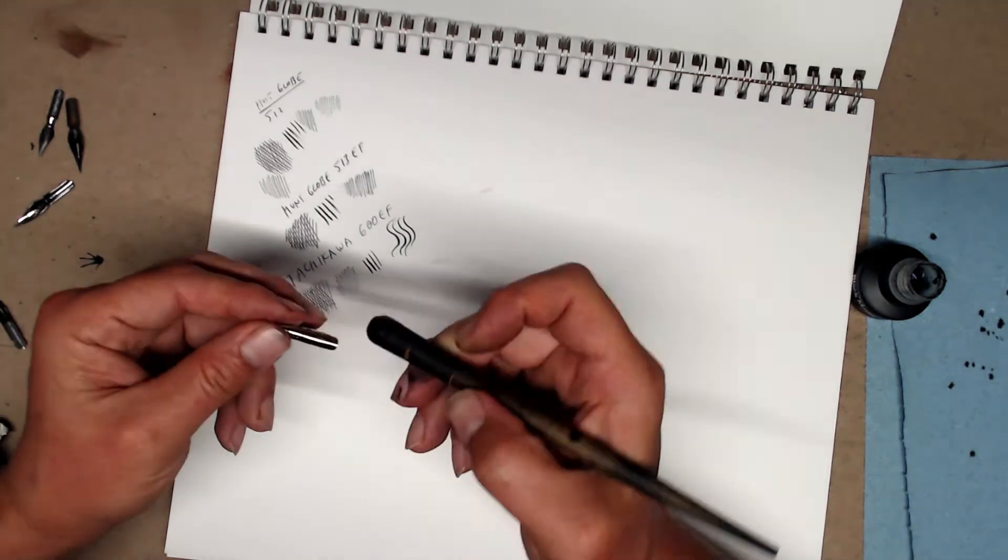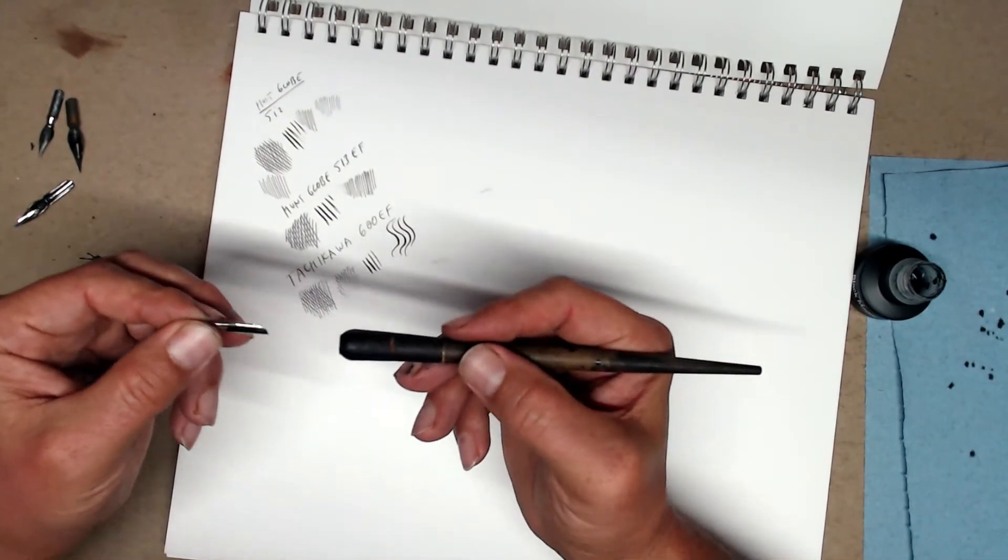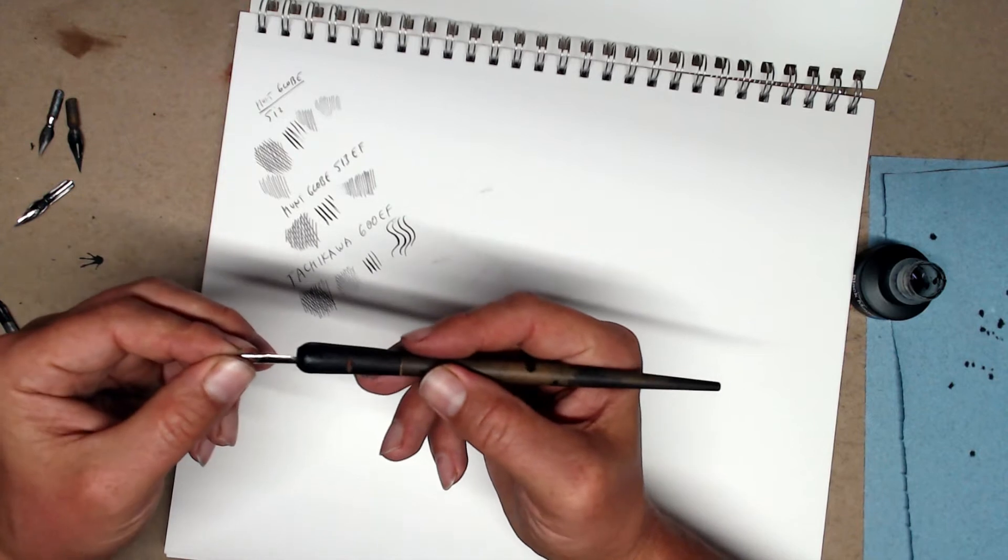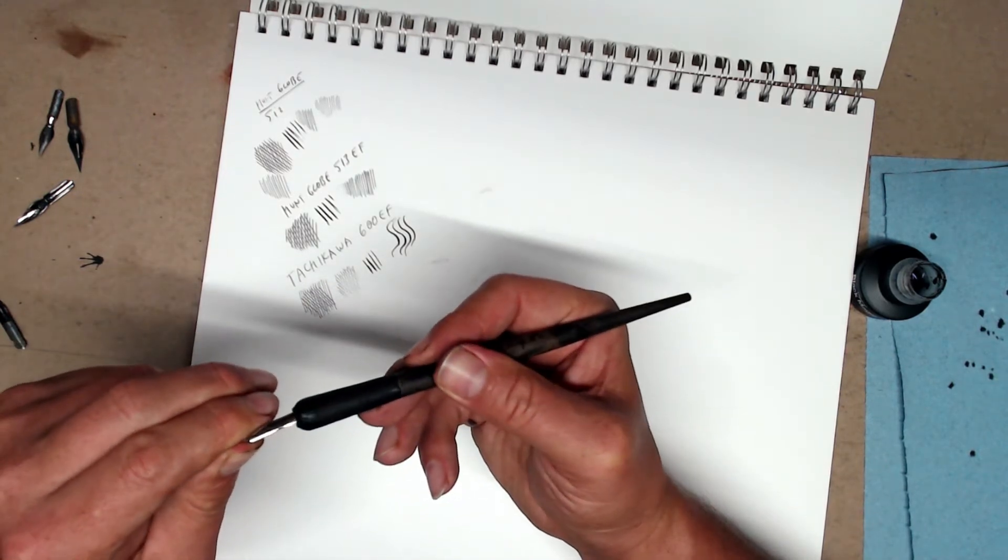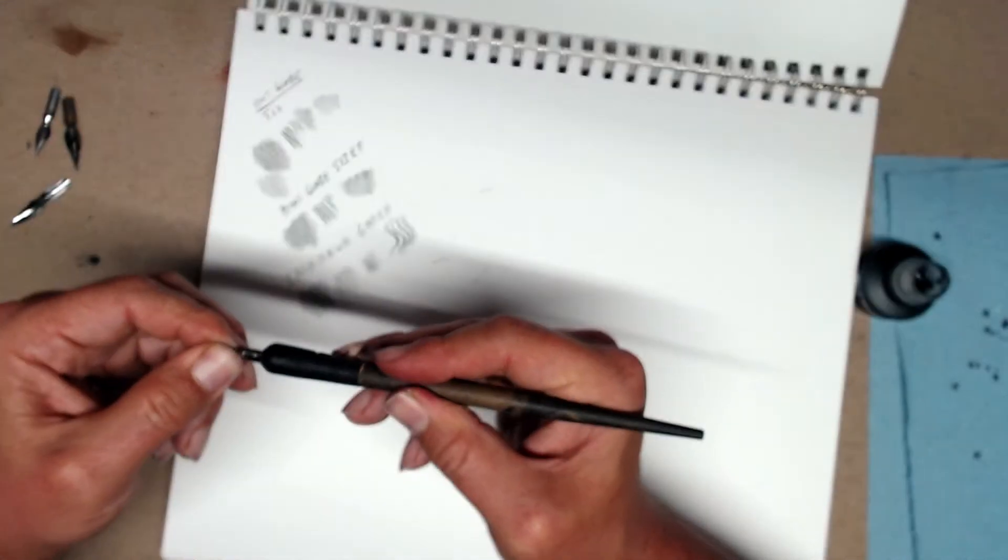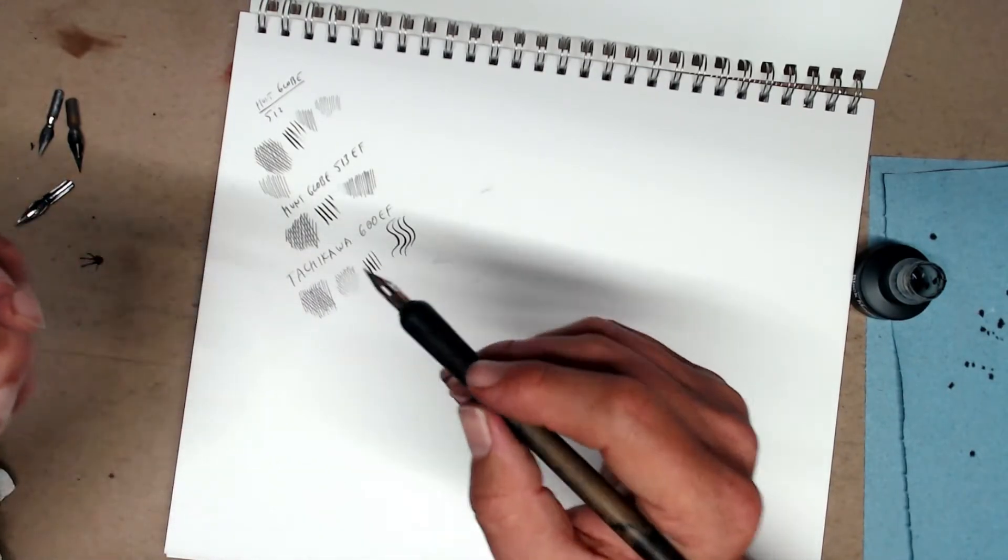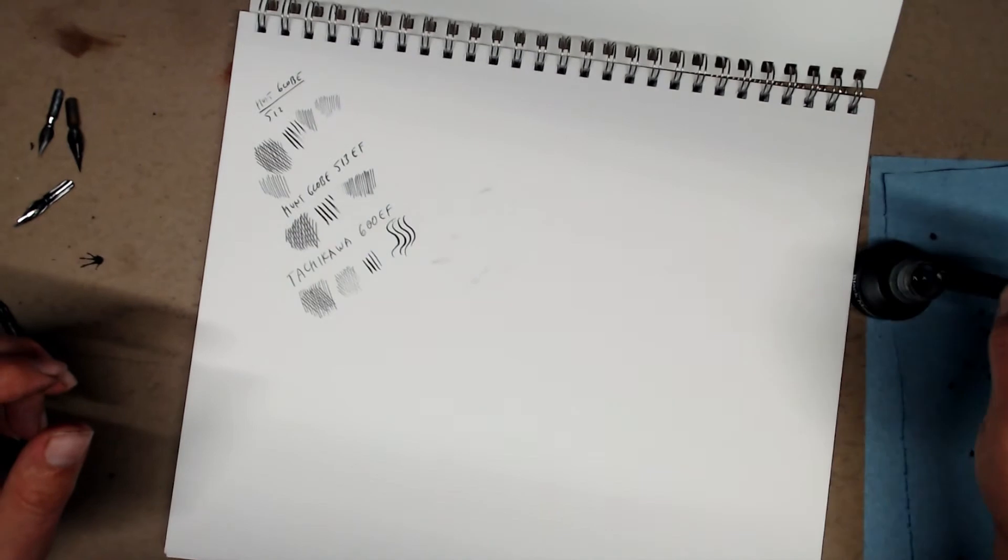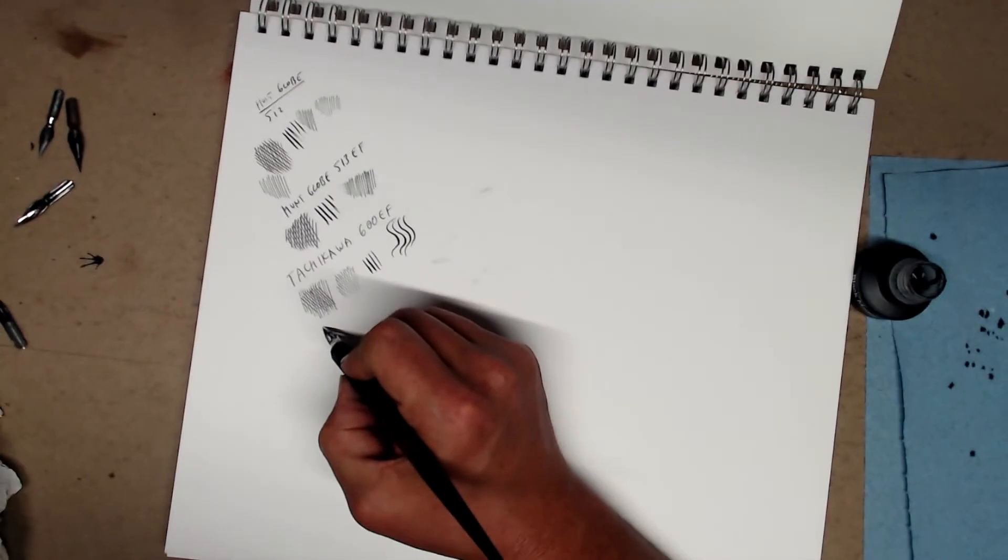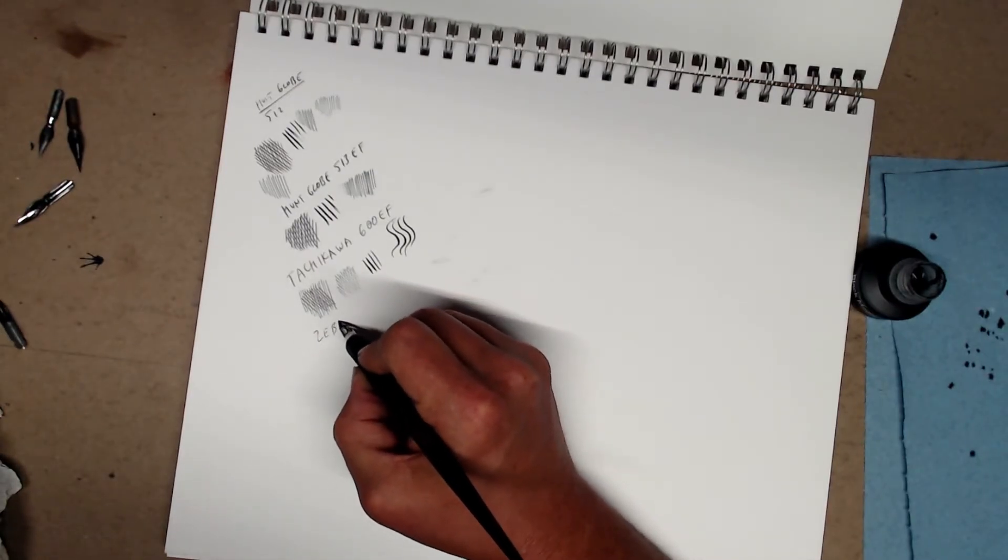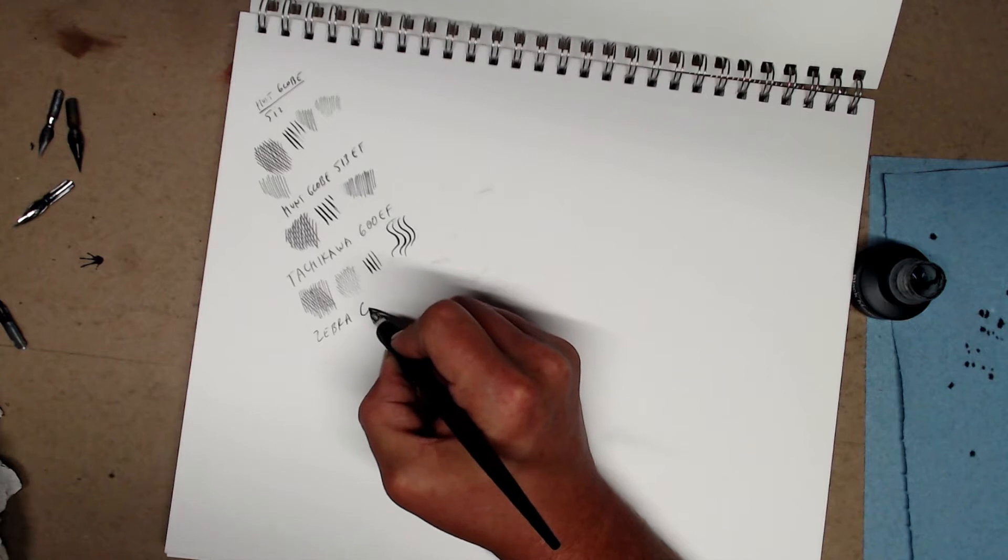This is another nib that is really famous. It's the Tachikawa Zebra G. This is another pen that is really commonly used in Manga drawing. It puts down a really, really thin line.